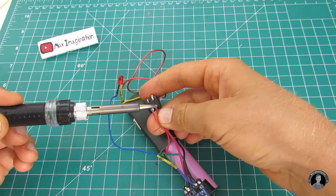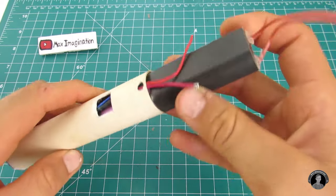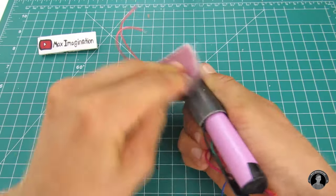Next let's get things into the PVC case. If your stun gun module doesn't quite seem to fit into the pipe, then you can sand a bit of the plastic off.